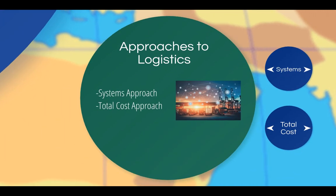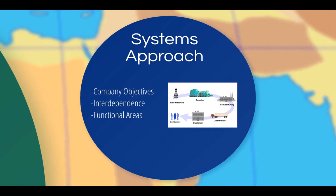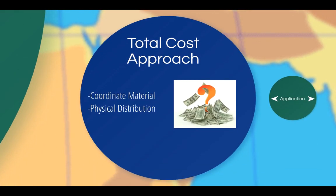There are also a couple of important approaches that logistics professionals take. The two major approaches are the systems approach and the total cost approach. The systems approach indicates that a company's objectives can be realized by recognizing the mutual interdependence of the major functional areas of an organization, such as marketing, production, finance, and logistics. Because different organizations have different goals and objectives, logistics managers use the total cost approach to ensure that material management and distribution are coordinated in the most cost-efficient way.